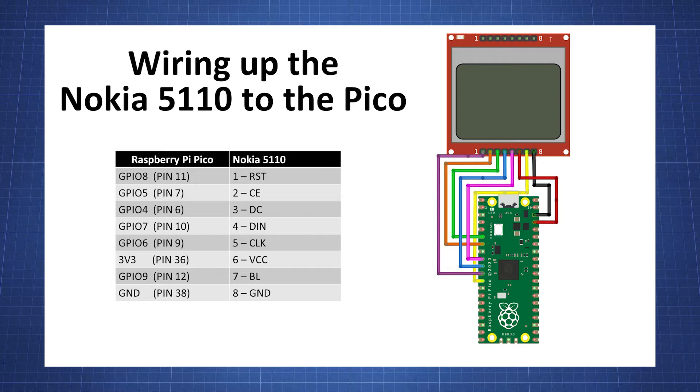The module has 8 pins and interfaces with the Pico SPI communication. Here is a table to show each pin with its name and description. I made the following connections for this video but you might want to use the SPI one or a different pin to control the backlight.